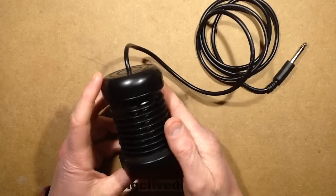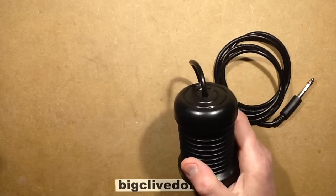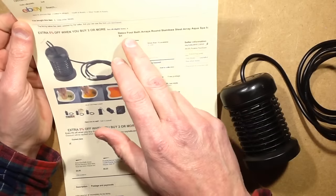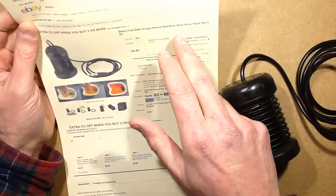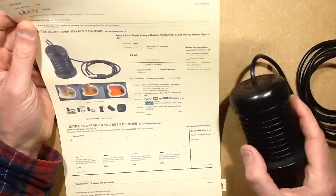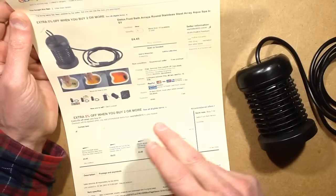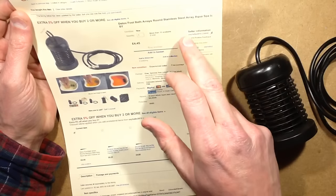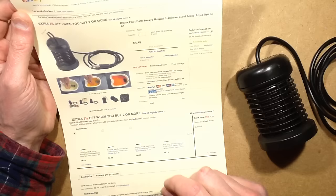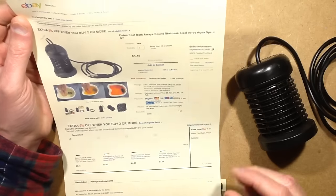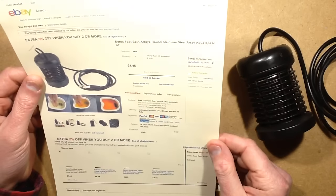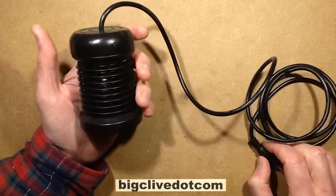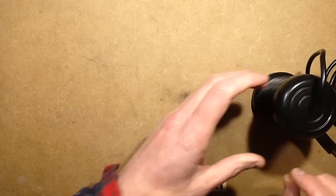So this electrode here, this is one of the consumable electrodes, came from eBay, surprise surprise, from China, bigger surprise. It's described as a detox foot bath array, round stainless steel array. Stainless steel, really? And it cost £4.45, and it came from a seller called Say Hello 2015, which is one of the easiest names to remember in a while. Yes, it came from eBay, and the idea of these things is that you, well, I'll do a wee doodle actually.